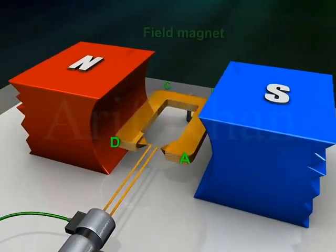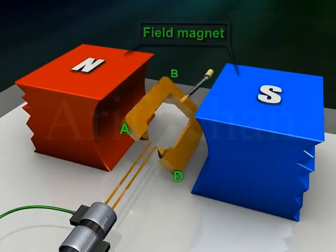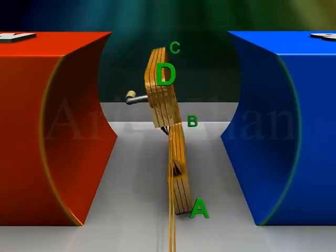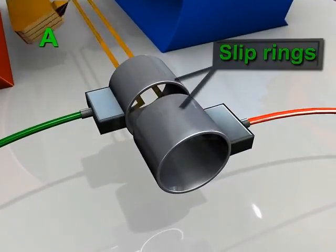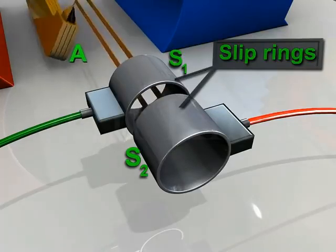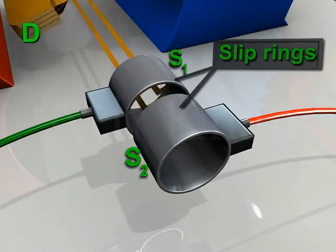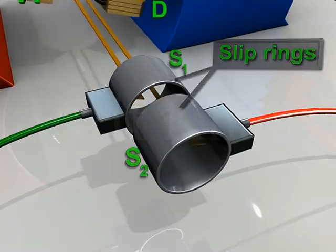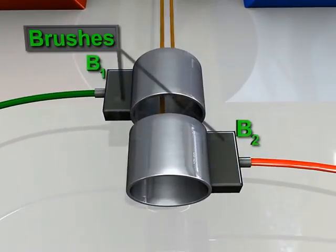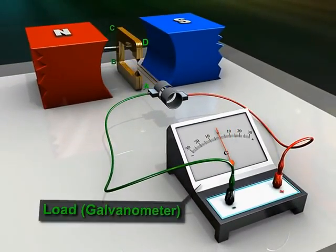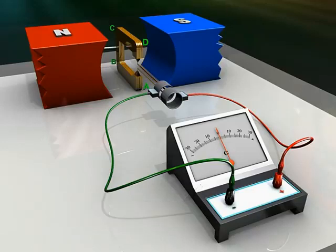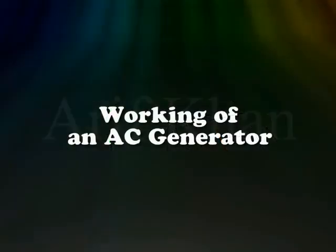A field magnet, which may be a strong permanent magnet with concave poles. Two slip rings S1 and S2, which are connected to the armature and rotate with it. Two brushes B1 and B2 provide electrical contact with the slip rings, and a load which may be a galvanometer.